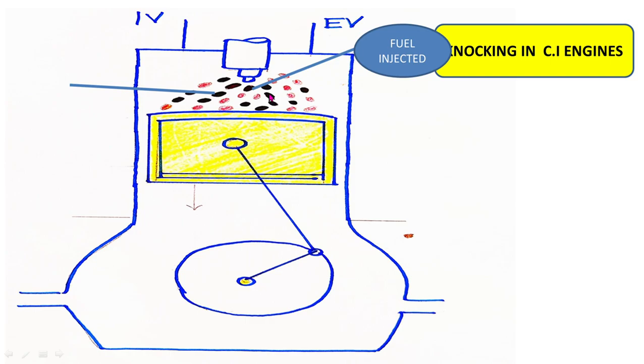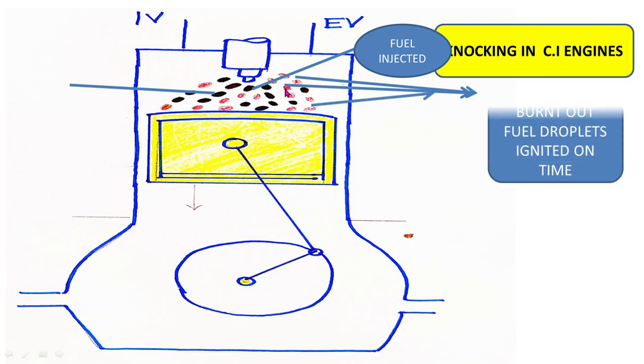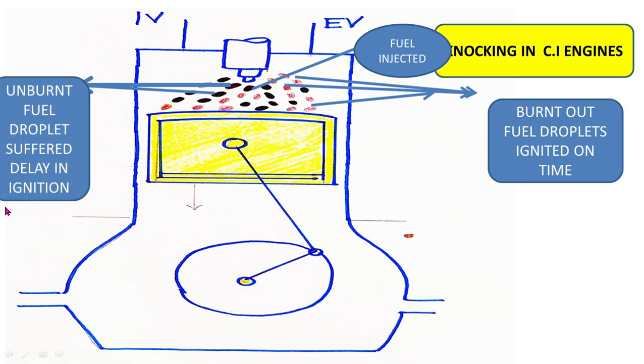In the diagram you can see red colored droplets are those fuel droplets that are ignited on time, that are burnt on time as shown, and black colored fuel droplets are those droplets that remained unburnt as shown here. Now when these accumulated black colored droplets of fuel ignite suddenly because of increase in temperature and pressure,